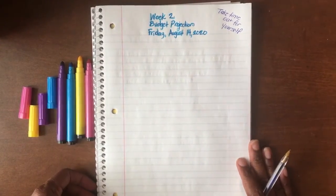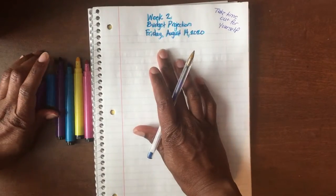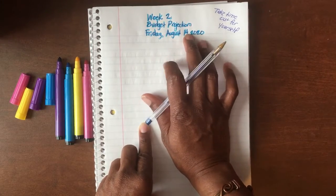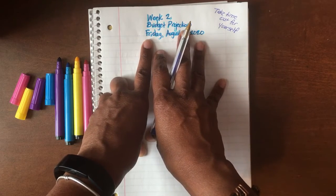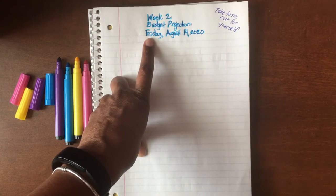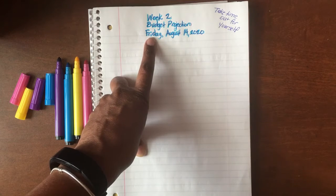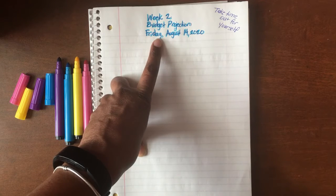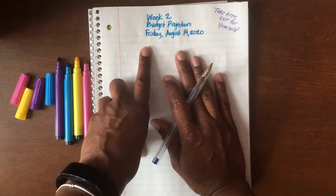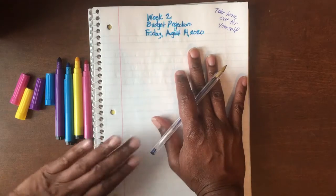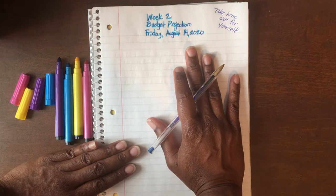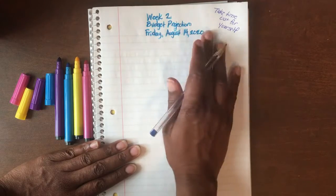Okay everyone, let's get this budget started. This is week two budget projection. Today is Friday, August the 14th. My little tidbit of motivation or inspirational information for you today is to take some time out for yourself. You definitely need to do that. I am doing that every day this month because it's my birthday month. Today's activity was my workout. I decided to go and walk three and a half miles around the mall parking lot.